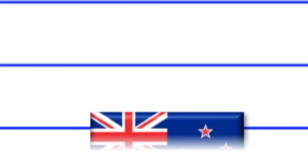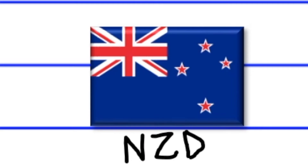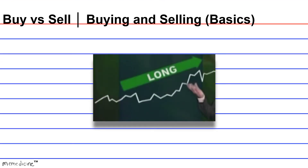You might hear a retail trader say 'I'm going long on the New Zealand dollar,' meaning they're buying the NZD with their respective quote currency. Again, if a trader goes long, they place a buy order; if they go short, they placed a sell order.